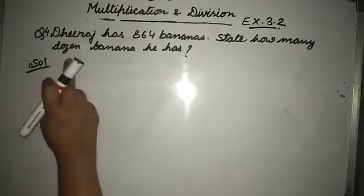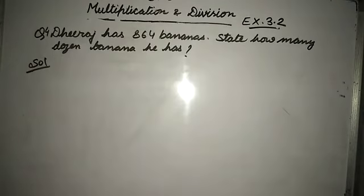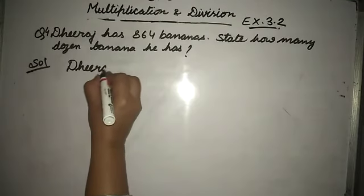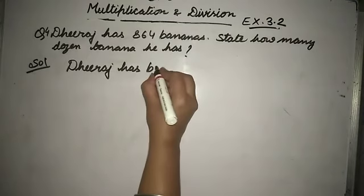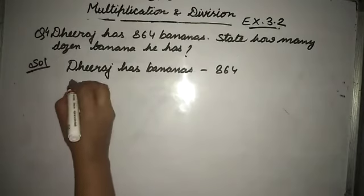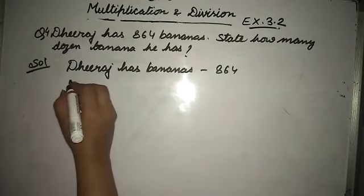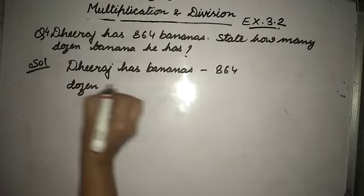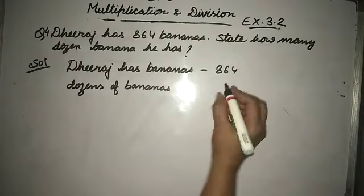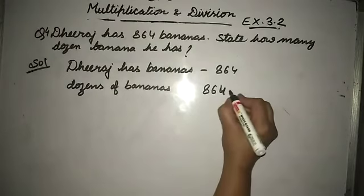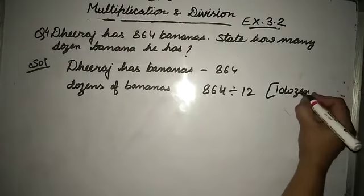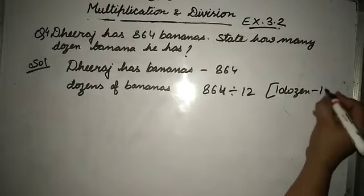How many dozen bananas he has? Dheeraj has 864 bananas. Number of dozens of bananas - how much are we? What do we do? We divide by 12. Why? Because one dozen equals to 12. Okay? One dozen equals to 12. So we divide by 12.